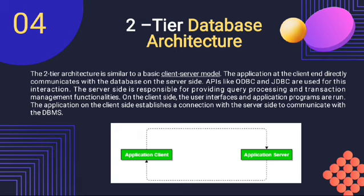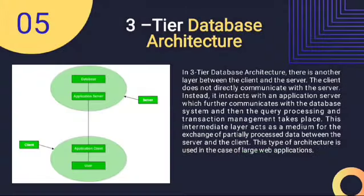Now, the two-tier database architecture consists of multiple clients connecting directly to the database. This tier architecture is also known as client-server architecture. From the diagram, you can understand that in a two-tier architecture, the clients are connecting directly to the database. For an example, in a house customer relationship management system that connects to access data.